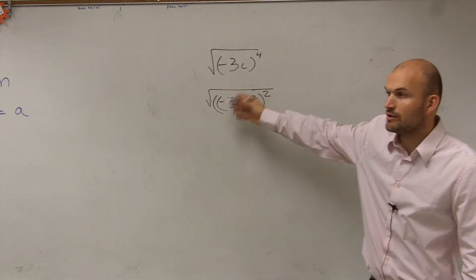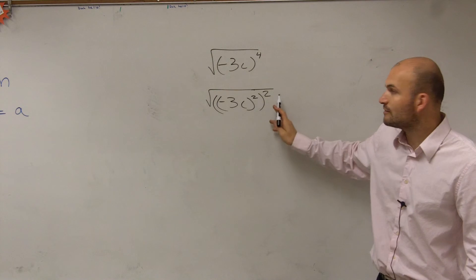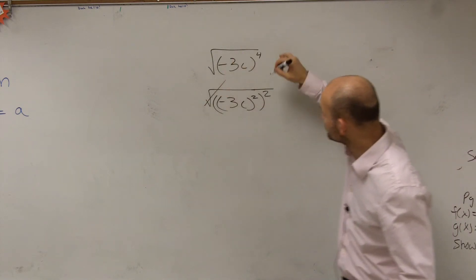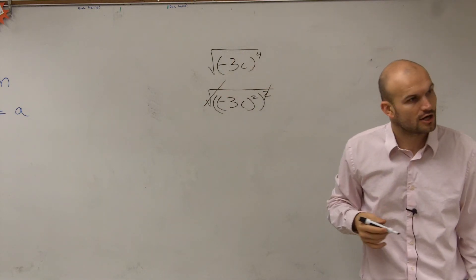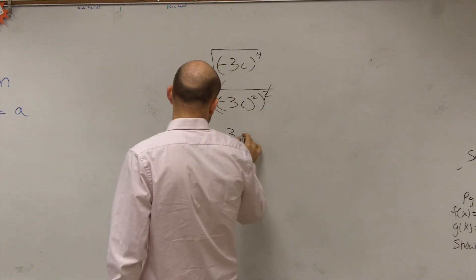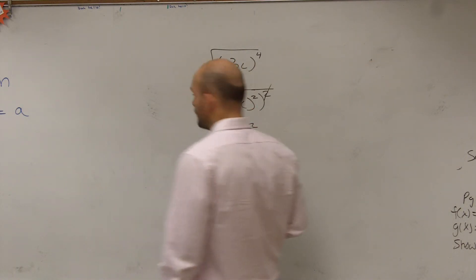So you're not taking the square root of a negative number yet. You can rewrite this as square. Therefore, your square root and your second squaring are going to undo each other, leaving you just with negative 3c squared.